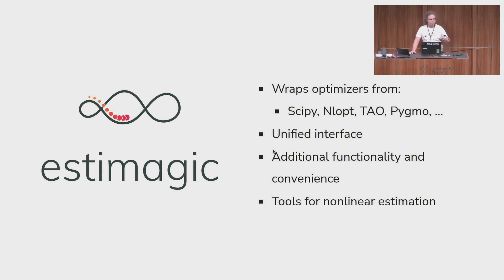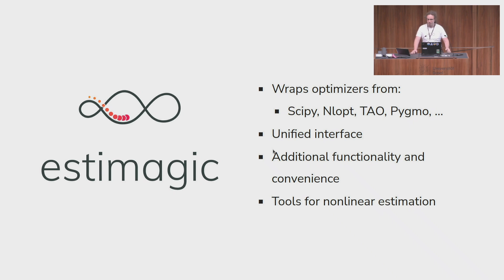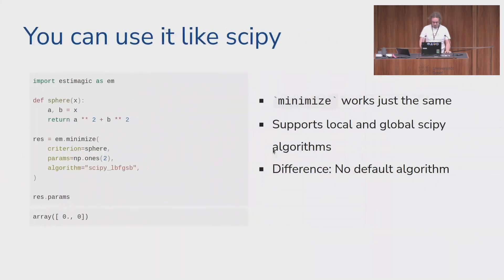The name SDMagic came from the fact that initially we had a very strong focus on statistical estimation of nonlinear models — we also have tools for getting standard errors for likelihood models — but nowadays most people use SDMagic purely as an optimizer library. To use it, you can basically start using it like scipy: import SDMagic typically as em, then code up your criterion function, which in this case is just a parabola.